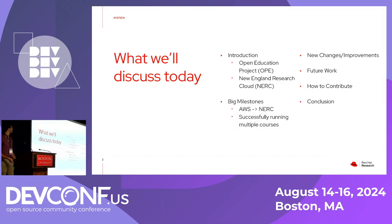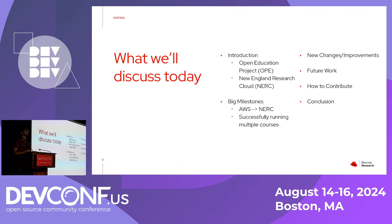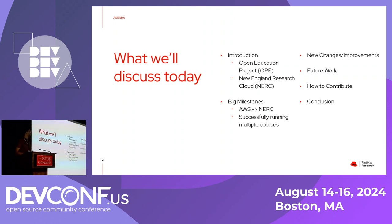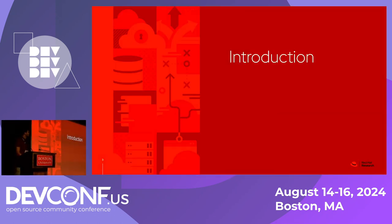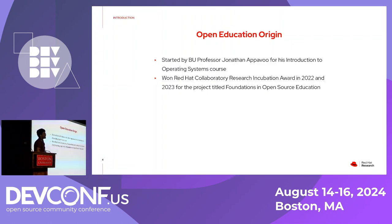So what are we going to be talking about today? First I'm going to introduce what the open education project actually is, and then what the New England Research Cloud is, some big milestones we've had for the project, some new changes and improvements we've made to OPE, and then we'll talk about some future work, how you can actually contribute to this project — because of course it is open source — and then we'll conclude and go into a Q&A.